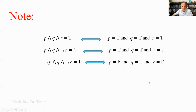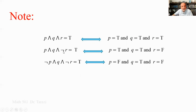Consider the logical expression P AND Q AND R — it is true if and only if P is true, Q is true, and R is true; all three must be true. If instead we have P AND Q AND NOT R, then P must be true, Q must be true, and NOT R must be true, meaning R is false.